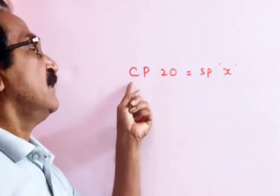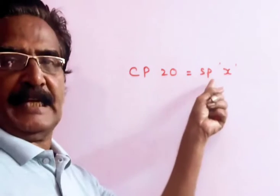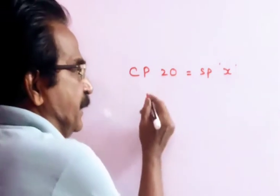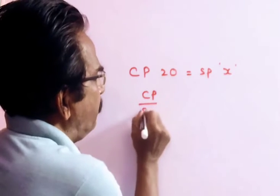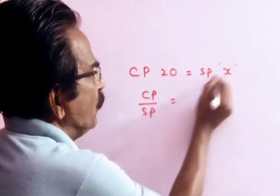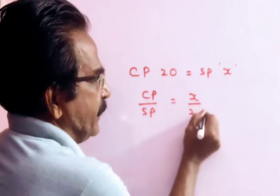Cost price of 20 articles is equal to selling price of X articles. This implies cost price over selling price is equal to X by 20.